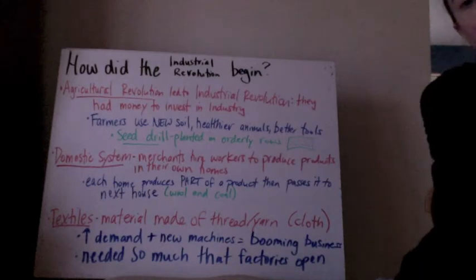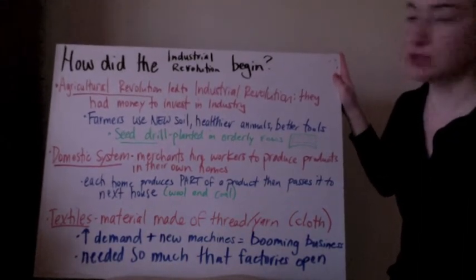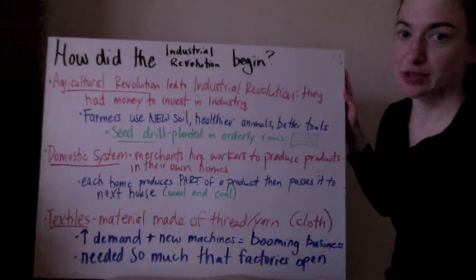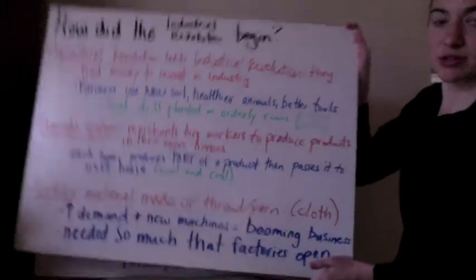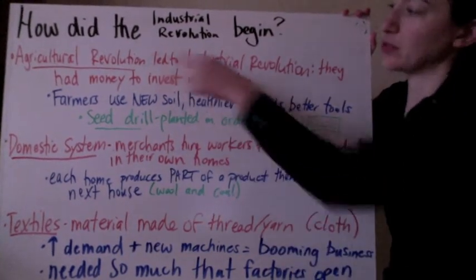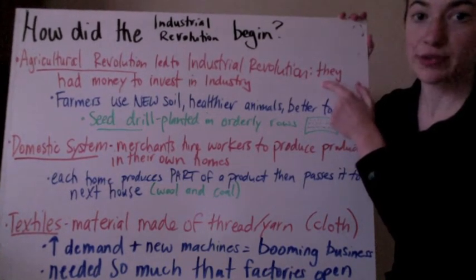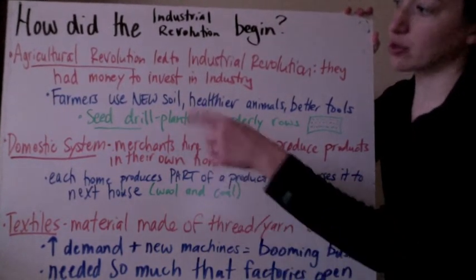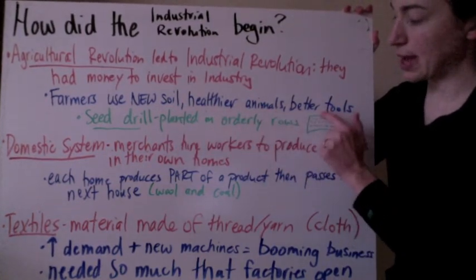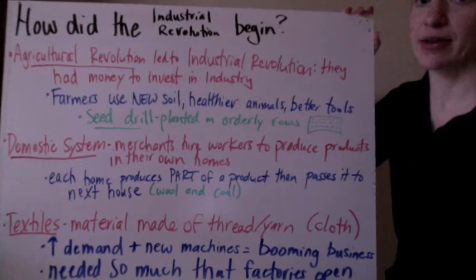How did the Industrial Revolution begin? The revolution began with the Agricultural Revolution. Agricultural means a way of farming. The Agricultural Revolution led to the Industrial Revolution because farmers were able to make money and then invest that money in their businesses. Through the Agricultural Revolution, farmers used new soil, healthier animals, and better tools, so they were able to farm more efficiently and get more out of their farms.